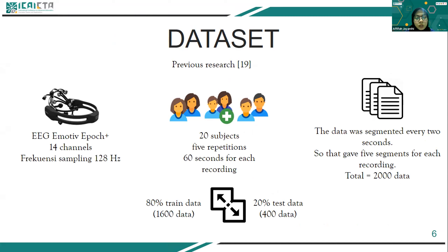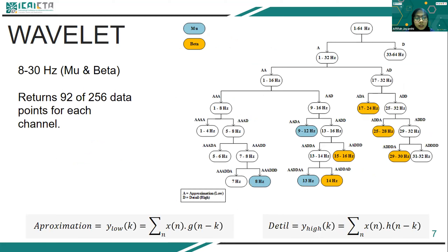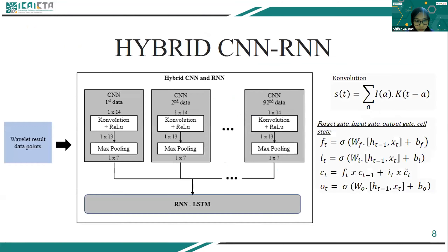Each data was segmented for 2 seconds, generating 5 segments per recording, for a total of 2,000 data points where 1,600 are used for learning and 400 for testing. The dataset is filtered using wavelets to obtain the frequency components mu and beta waves in the range of 8 to 30 Hz using decomposition. Filtering the EEG signal in one segment of 2 seconds produces 12 by 88 data points per segment. CNN is used to extract spatial features from the channel sequence to handle multi-channel data. The result of CNN is then input to RNN for training, using LSTM as a variation of RNN, to get temporal information in the form of sequences from data previously processed by CNN.